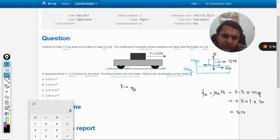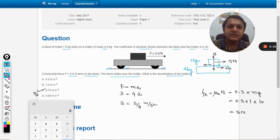So 3 newton will be acting in right direction and the mass of the trolley is 4, acceleration is a. From here, the acceleration will be 3 by 4 meter per second square, and so our answer will be C.